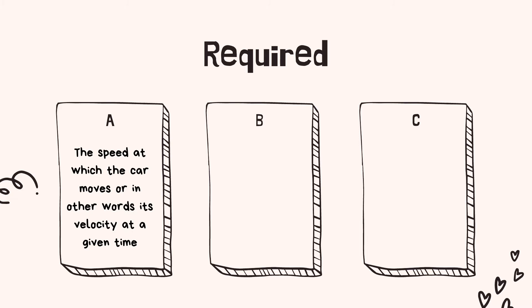There are a few things that you are required to report about. Number one, the speed at which the car moves, or in other words, its velocity at a given time. Number two, the car's acceleration at a given time. And number three, the duration it takes for the car to reach a specific speed.